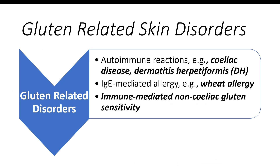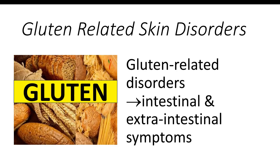Gluten-related disorders include: autoimmune reactions — for example, celiac disease, dermatitis herpetiformis, and gluten ataxia; IgE-mediated allergy, for example wheat allergy; and immune-mediated non-celiac gluten sensitivity. These disorders present with both intestinal and extra-intestinal symptoms, which may involve the neurological, cutaneous, reproductive, and musculoskeletal systems.